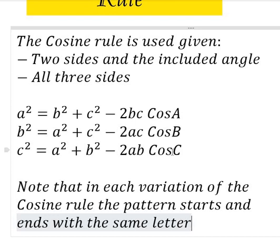You can see we are following a trend. The letter that starts each formula is what ends it — small letter a pairs with capital letter A, small letter b pairs with capital letter B, and small letter c pairs with capital letter C. You'll be able to use this formula whenever two sides and the included angle are given, or whenever all three sides are given.